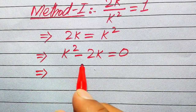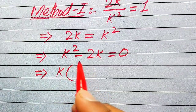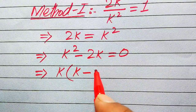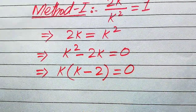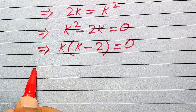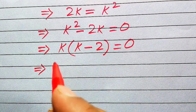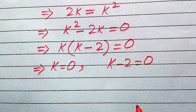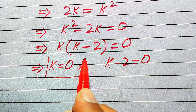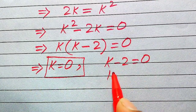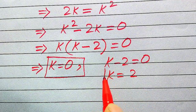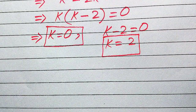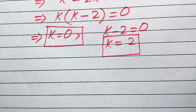We move 2k to the right hand side, giving us k squared minus 2k equals 0. In the next step we factor out k, which gives k times (k minus 2) equals 0. This splits into two cases: the first case is k equals 0, and the second case is k minus 2 equals 0, which gives k equals 2. These are the two roots of the given equation from the first method.